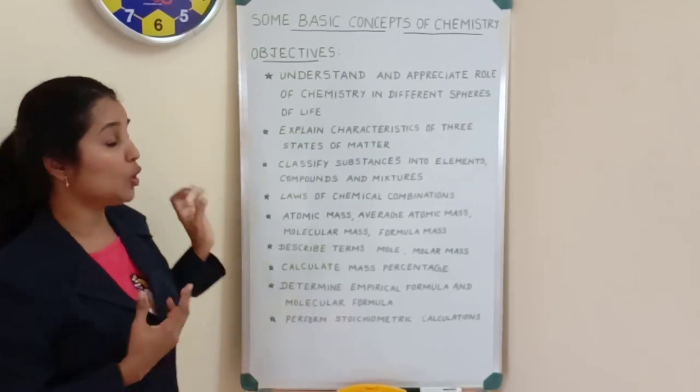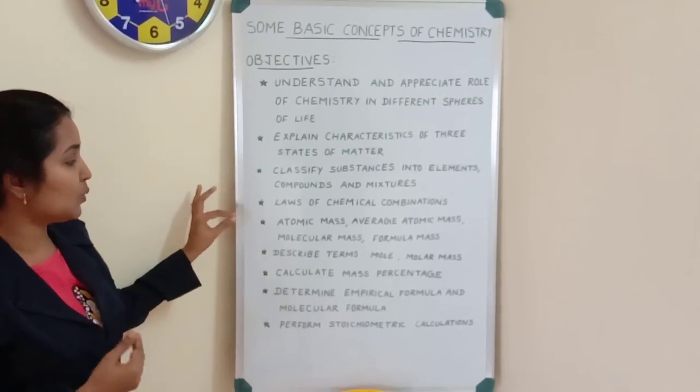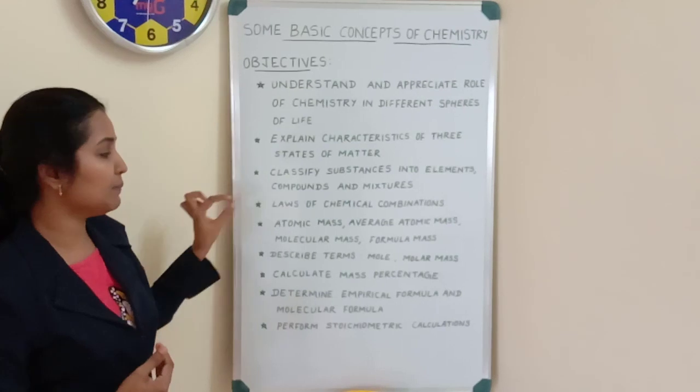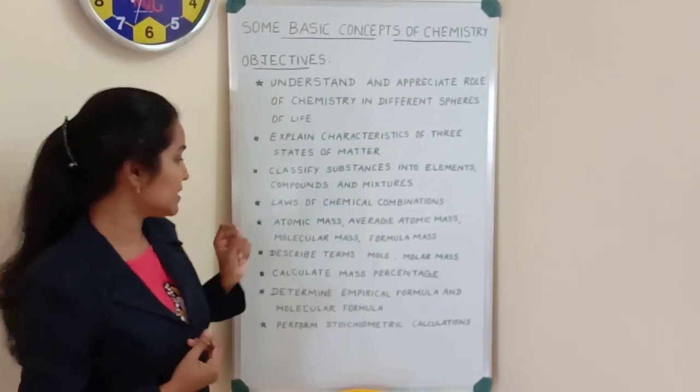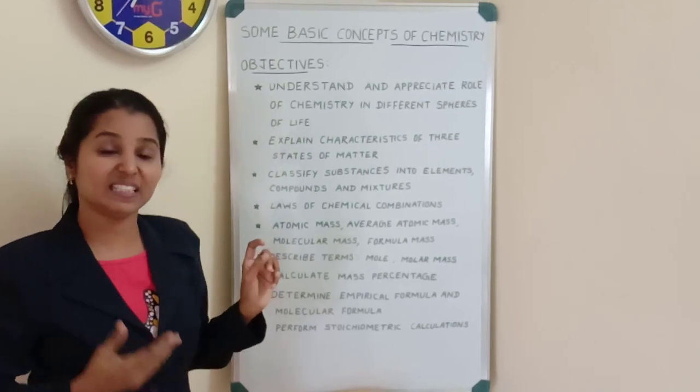Then, you will be learning laws of chemical combinations. And then, you will be able to understand or appreciate the atomic mass, average atomic mass, molecular mass, formula mass. These are some specific chemical terms.